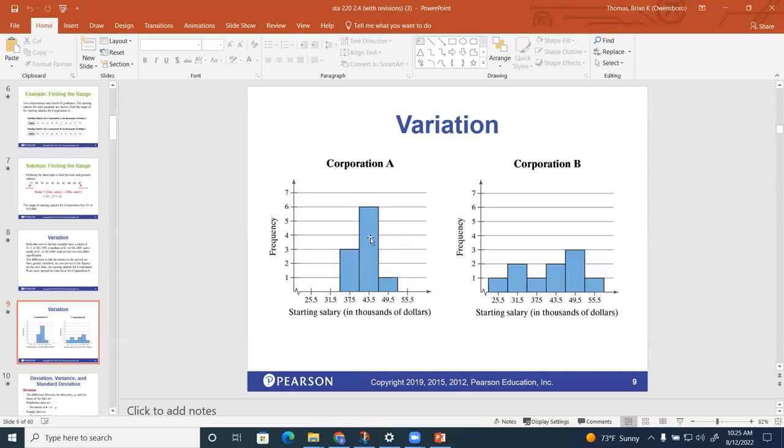So if we make a table, notice that corporation A—you can see the data doesn't look anything like corporation B. They don't look anything alike there. So the data looks a lot different.